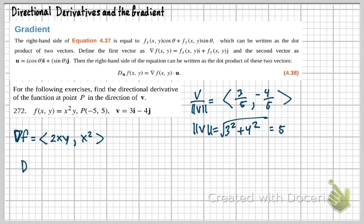Now I'm going to take that and dot it with my U. And I'm going to write this DU F, X, Y. And that equals 2XY comma X squared dotted 3 fifths comma negative 4 fifths. There we go.